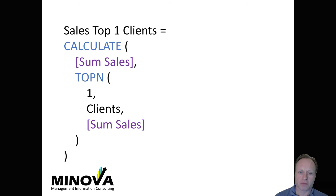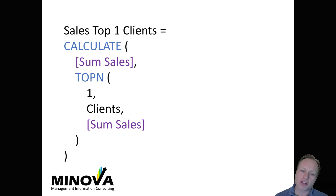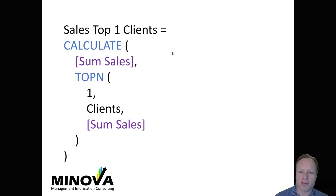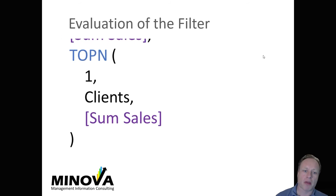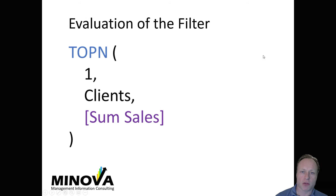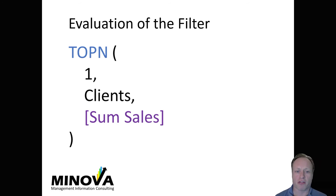We need to start off at the measure. This is the entire measure, and a measure gets evaluated within filter context. That filter context is going to start off at that filter as a part of the CALCULATE statement. So here it is — just the TopN part — this is going to be evaluated within filter context. If you're not sure on filter context, make sure you watch my video on filter context.